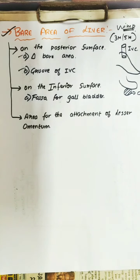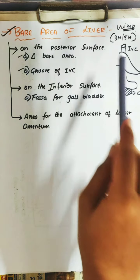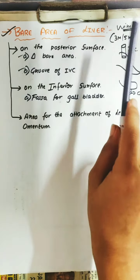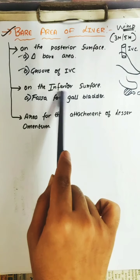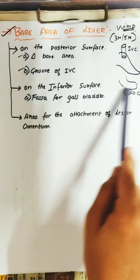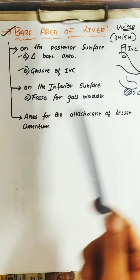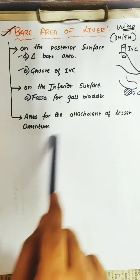So these are the bare areas of the liver. For a three-mark question: three areas. Or a five-mark question. On the posterior surface: triangular bare area and groove for inferior vena cava. On the inferior surface: fossa for the gallbladder — if you remove the gallbladder from that area, that area is bare. Then the area of attachment of the lesser omentum.